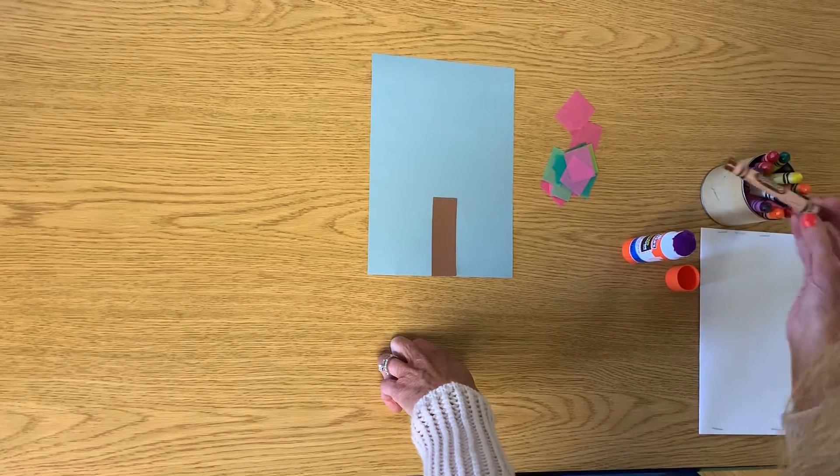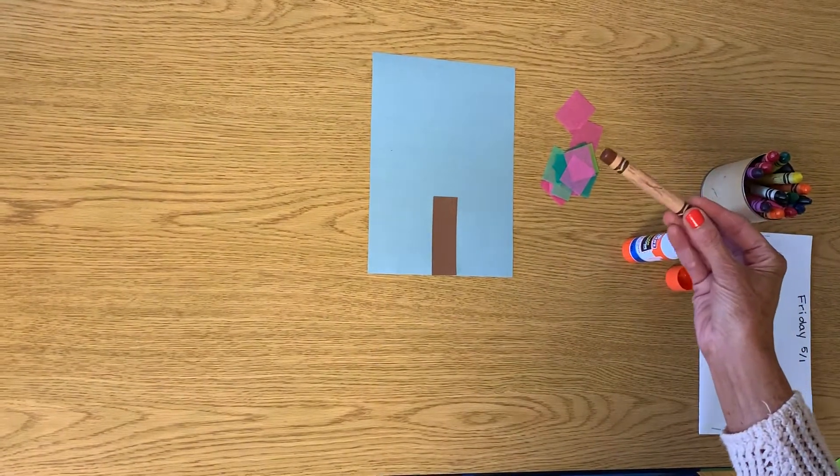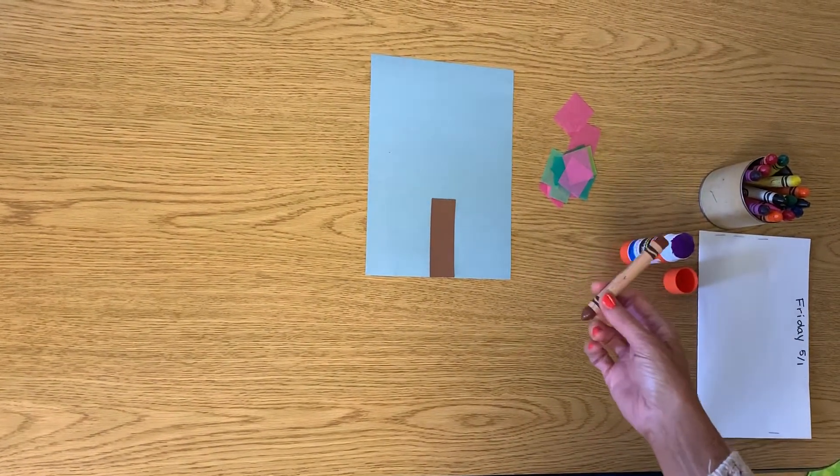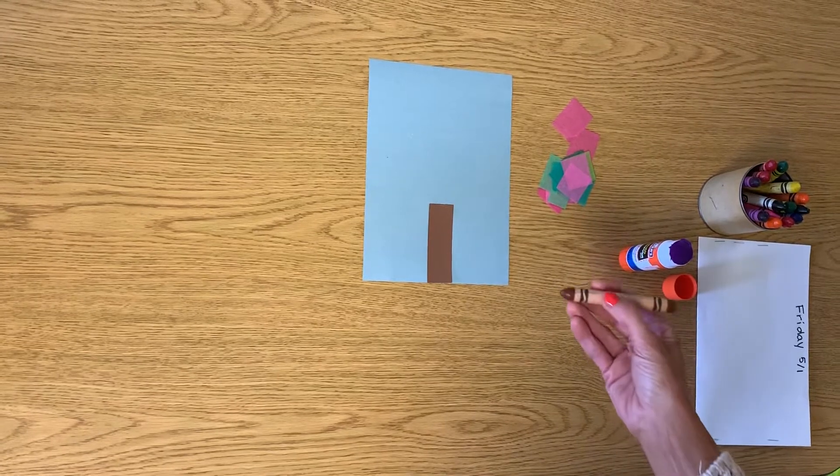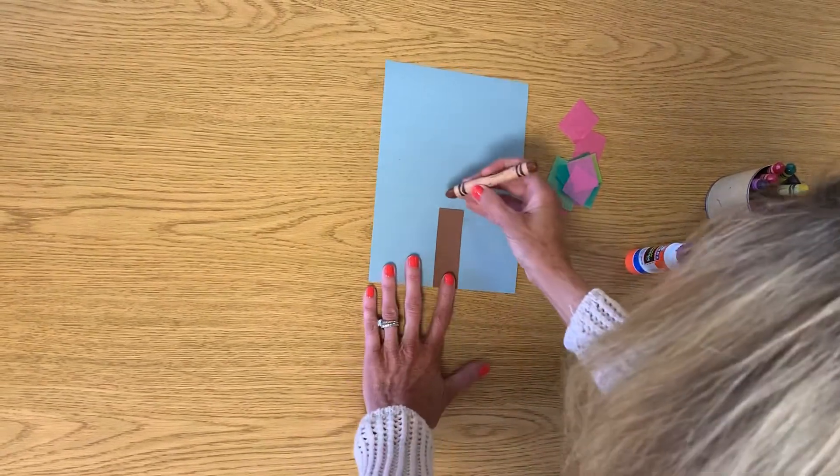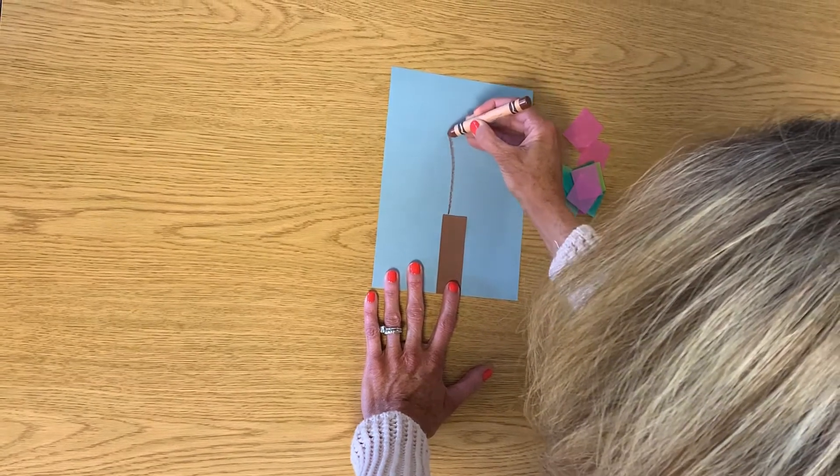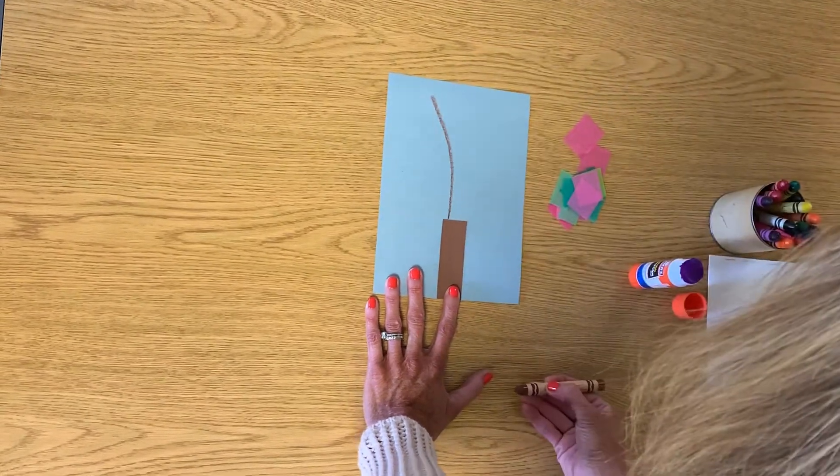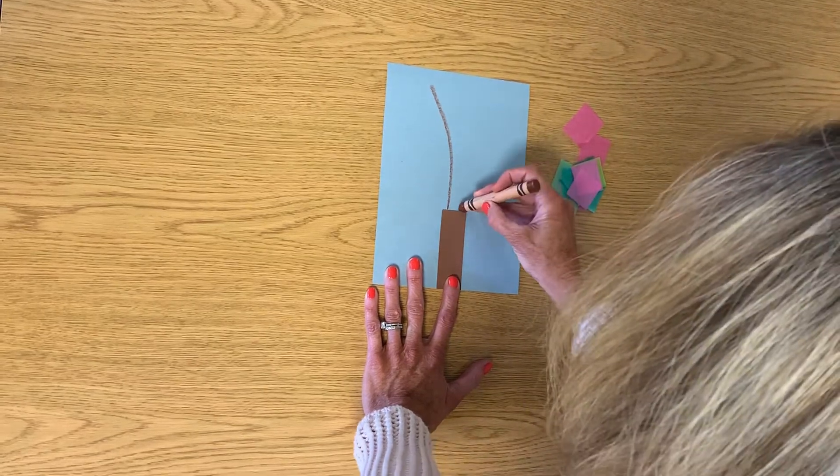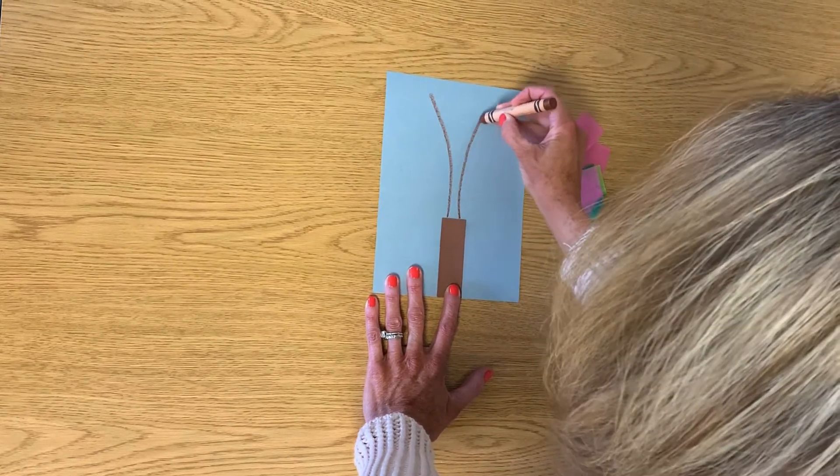So the next thing we're going to do is we're going to need a brown crayon. And from the trunk of a tree grows what? Branches. So to start with my branches, I'm just going to make one big long line come up and kind of curve out. And then I'm going to do the same thing and it's going to go off this way.